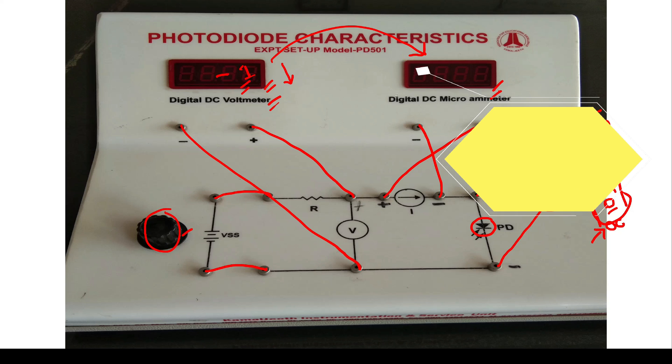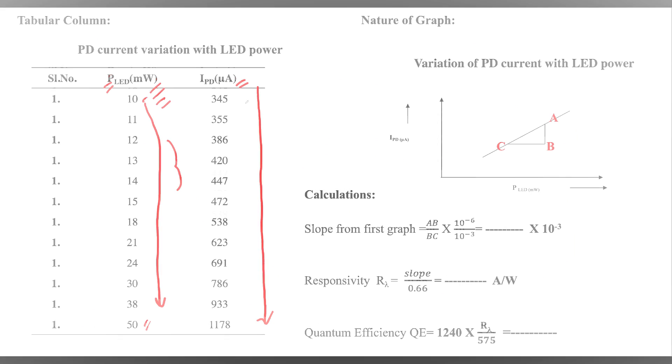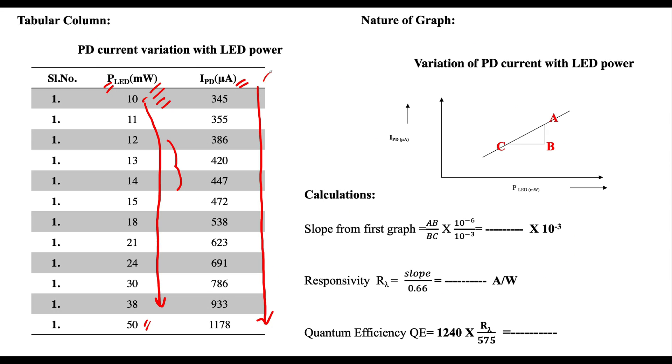Once you're done with this tabular column, you need to draw the graph: photocurrent through photodiode versus current through photo LED. Calculate the slope first. Once you got the slope, substitute the value to calculate the responsivity. Once you got the responsivity value, then substitute the value here to calculate the quantum efficiency.